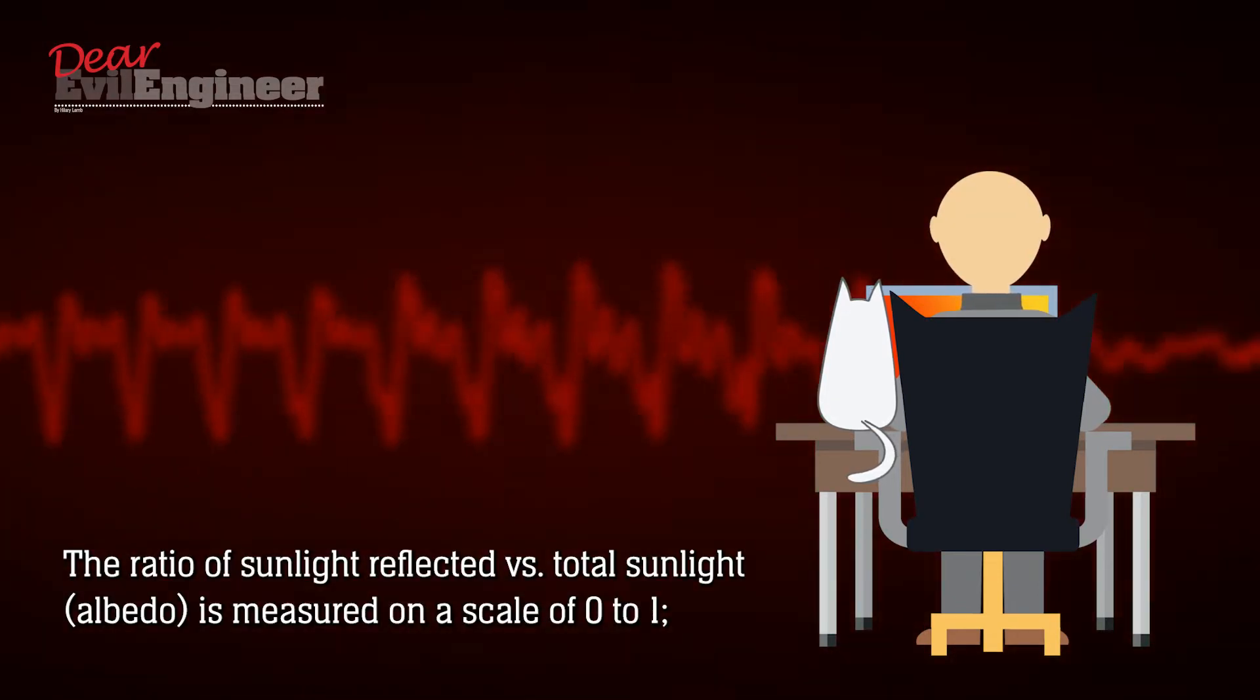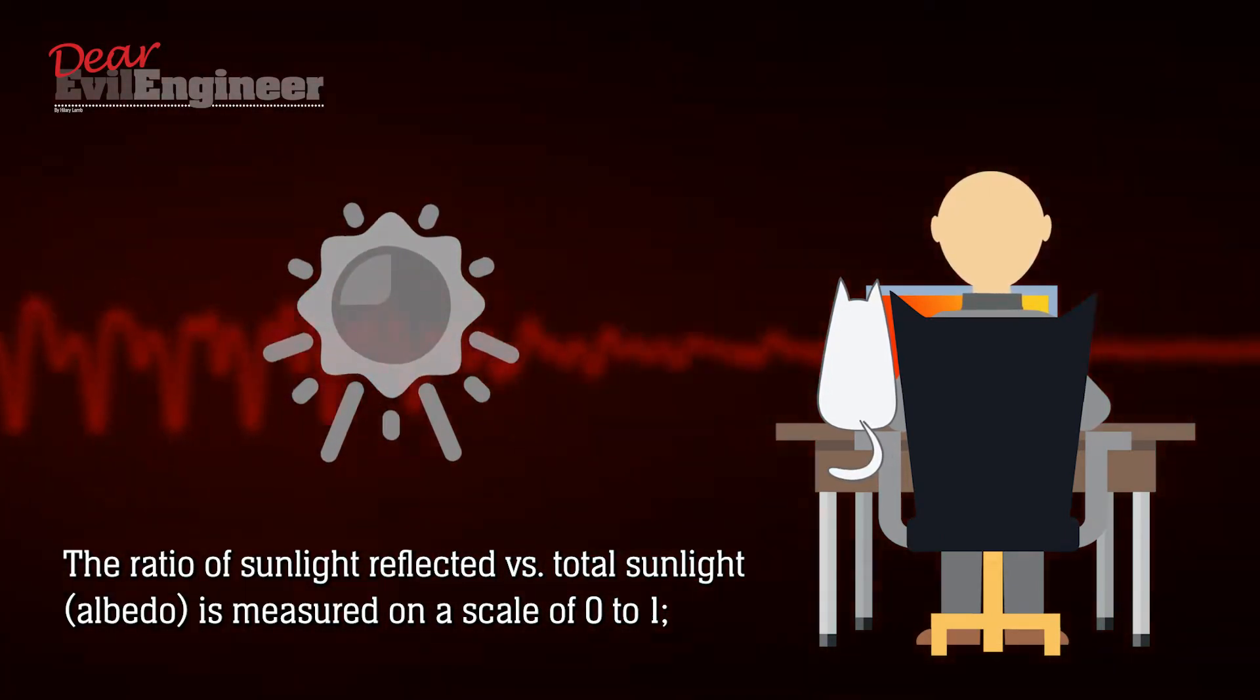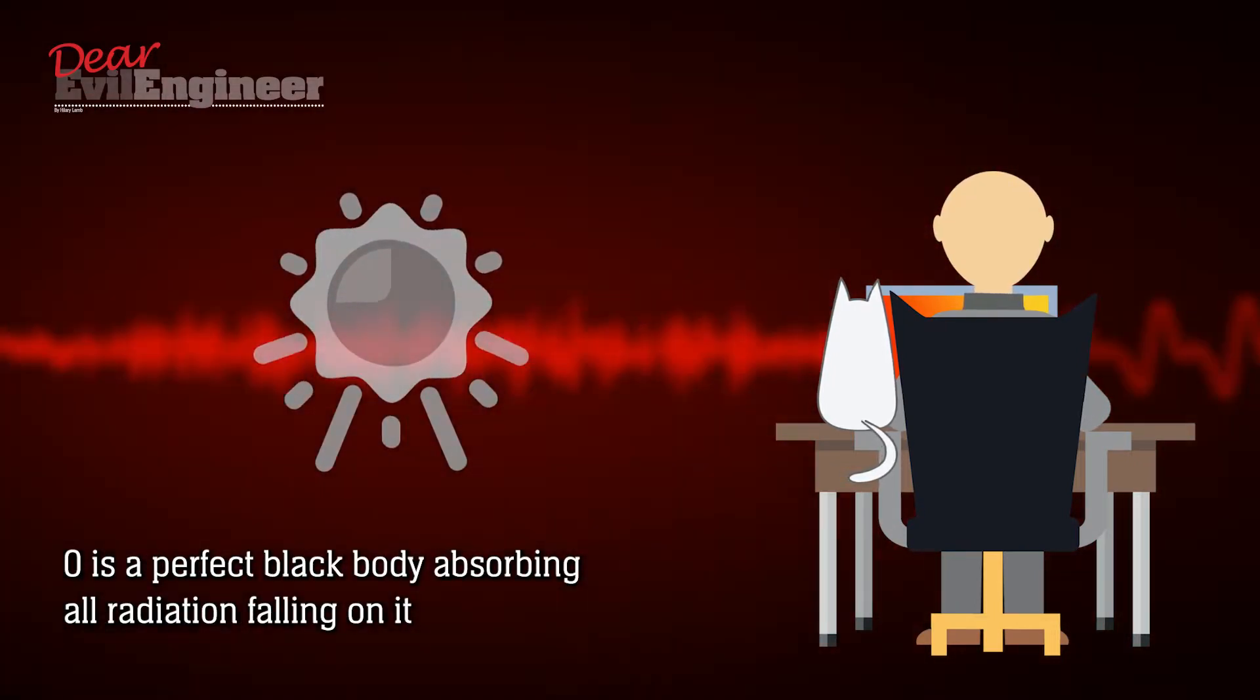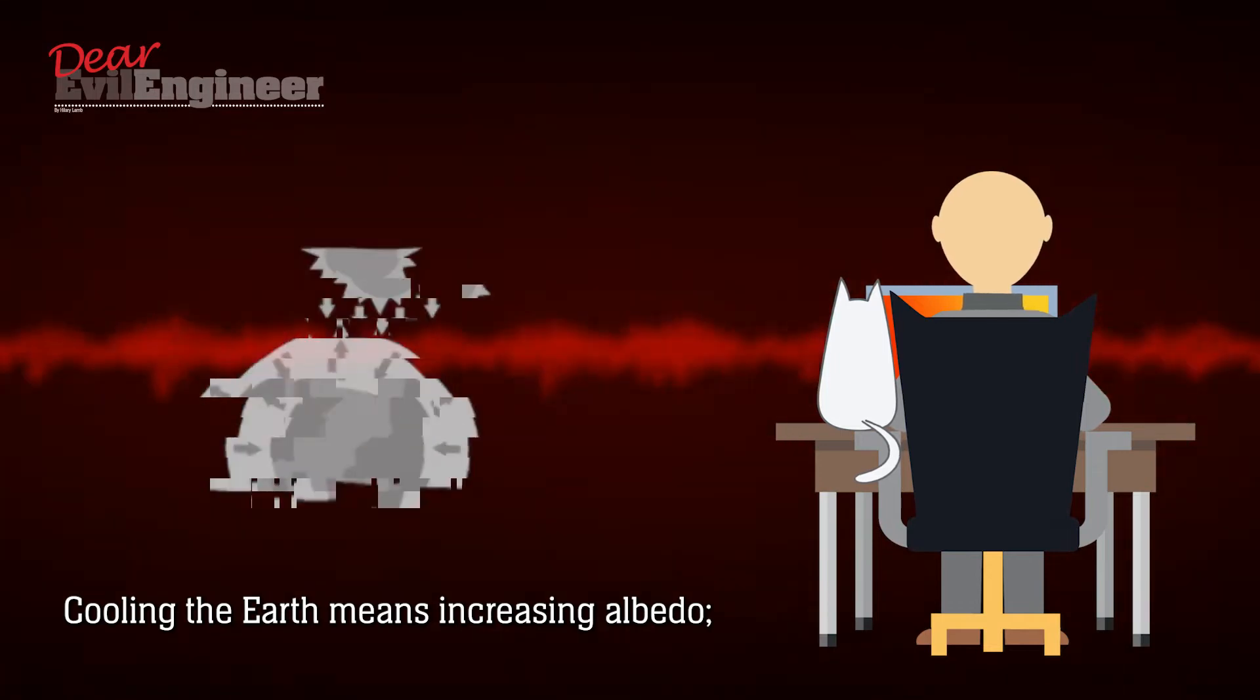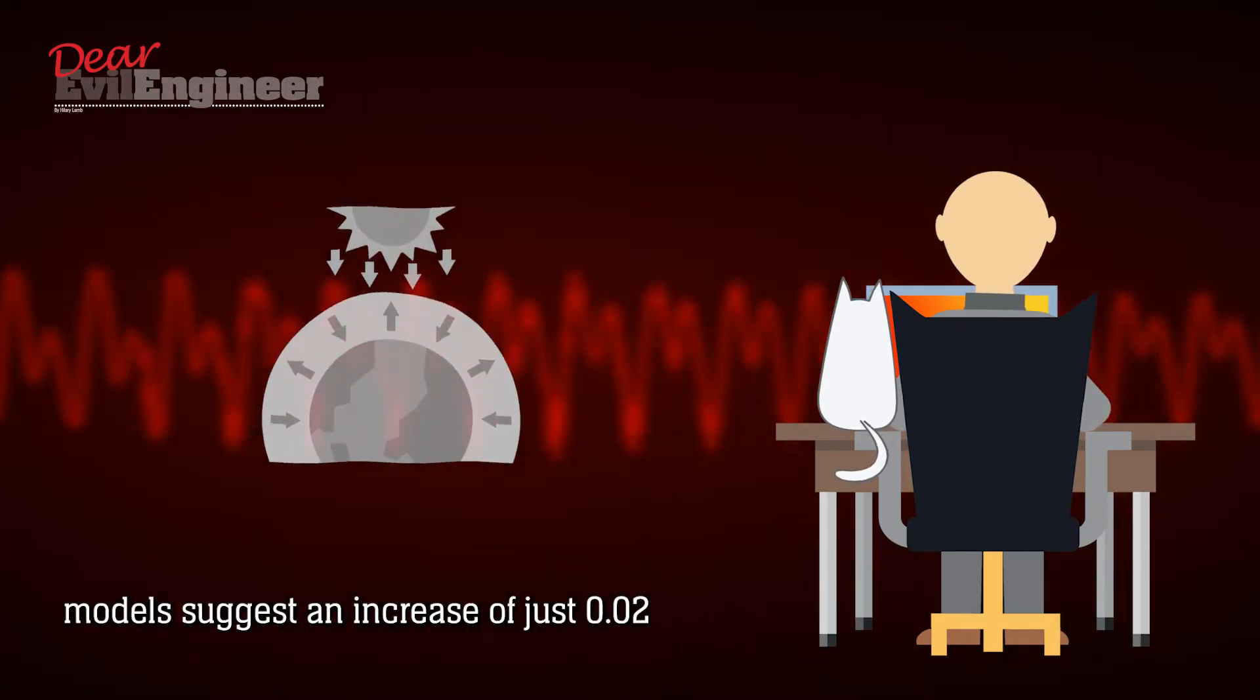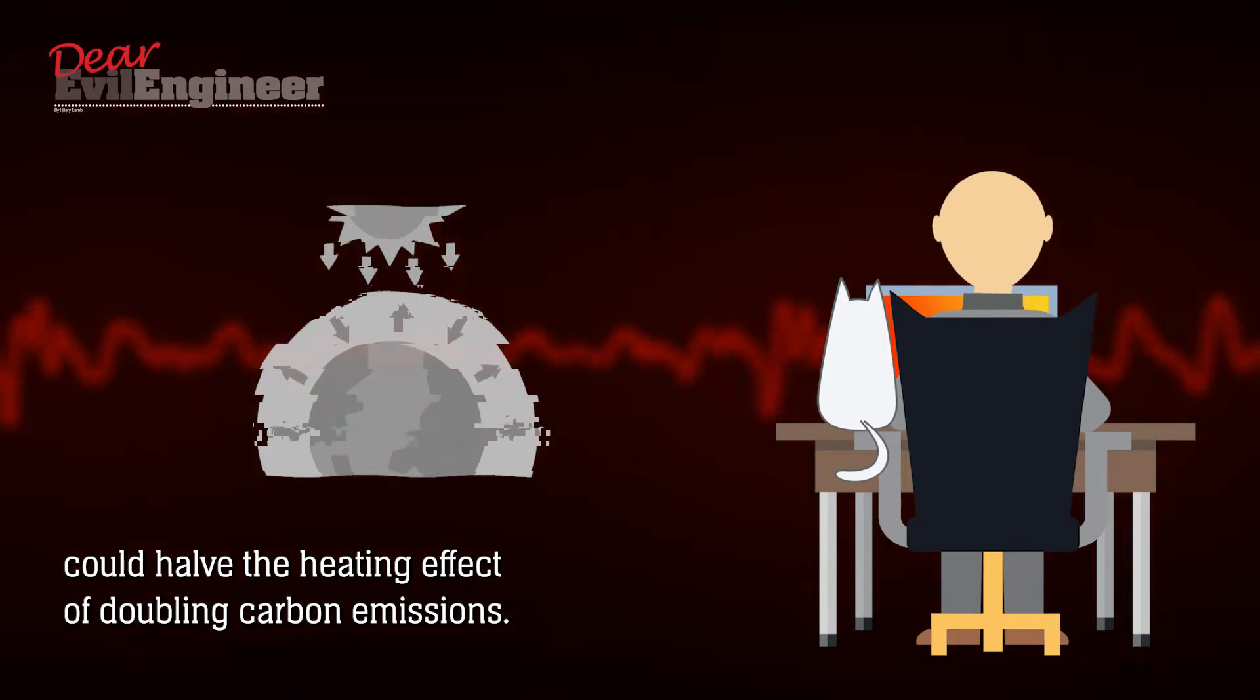The ratio of sunlight reflected versus total sunlight, albedo, is measured on a scale of 0 to 1. 0 is a perfect black body absorbing all radiation falling on it, while 1 is a surface reflecting all radiation. Cooling the Earth means increasing albedo. Models suggest an increase of just 0.02 could half the heating effect of doubling carbon emissions.